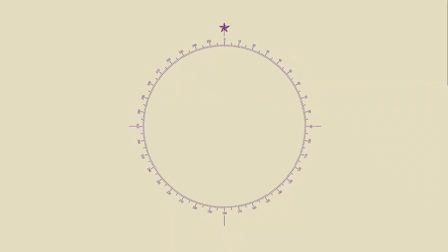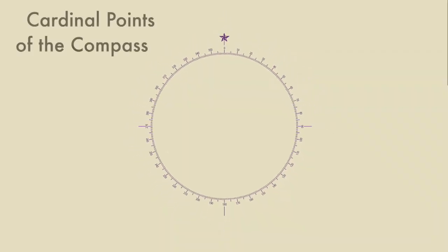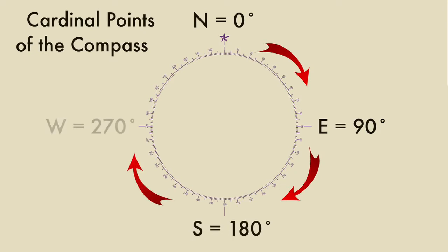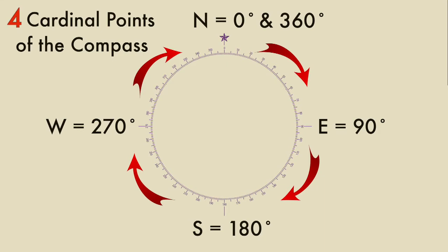This outer ring is used to let the reader know the cardinal points of the compass. North is at zero degrees. Moving to the right around the circle, east is at 90 degrees, south is at 180 degrees, west is at 270 degrees, and moving back to the top of the circle we find that north is also at 360 degrees. Those are the four cardinal points of a compass.